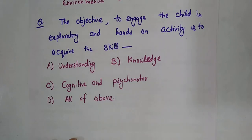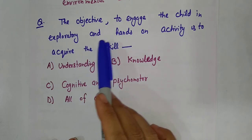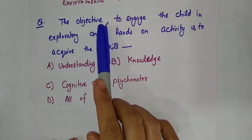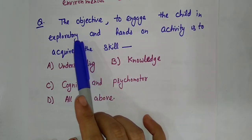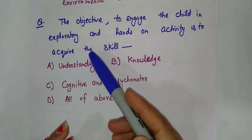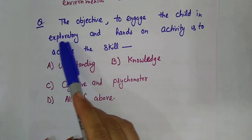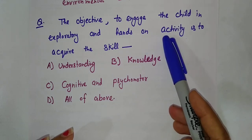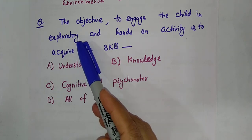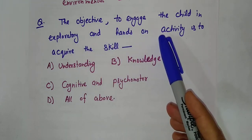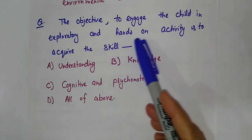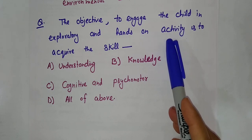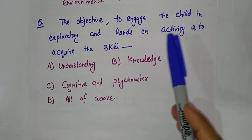The next objective: to engage the child in exploratory and hands-on activity is to acquire the skill. This is the objective of EVS. Exploratory work means more observations — learning through observation. Hands-on activity means project work, practical work, activities, and construction — where students are observing, doing classification, and then drawing conclusions and inferences. So all these activities are to acquire skills. Which skills? The skills we develop by giving these activities to children — as I have discussed in this topic.